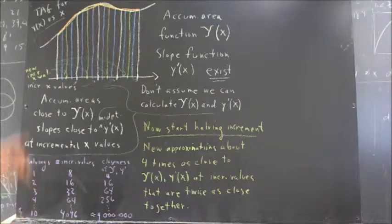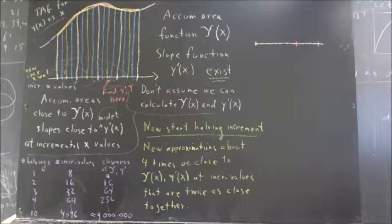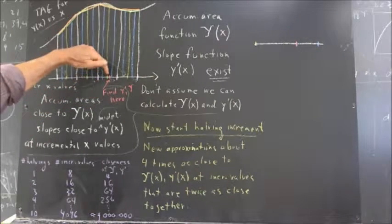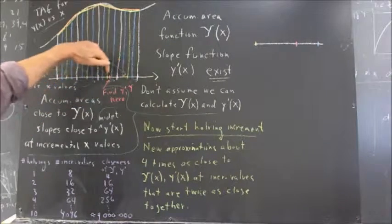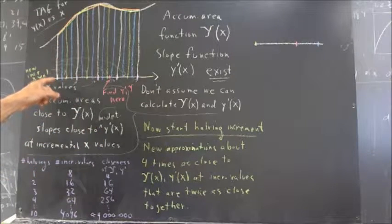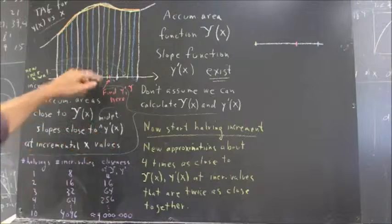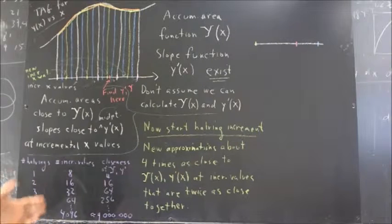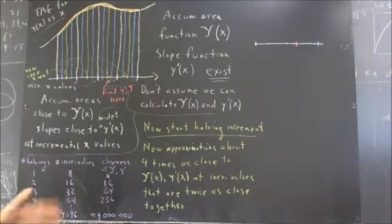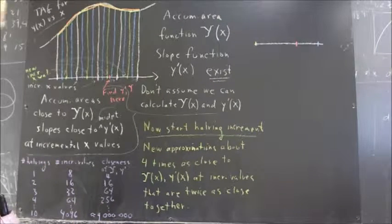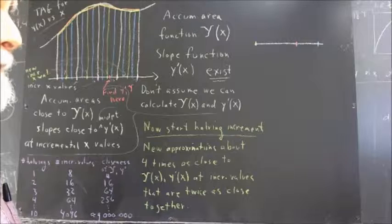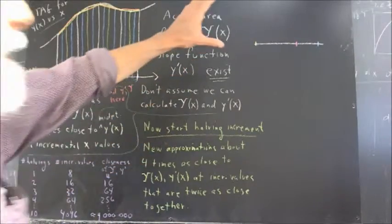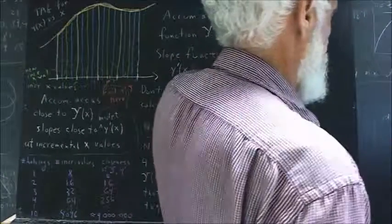Now what are the implications of this whole thing? Let's say we want to know what the values of y prime and big fancy Y are at a particular point — our slope function and our accumulated area function. So that basically means we want to find the accumulated area from here to here and the slope at this point with a great deal of precision. When you prove this in calculus, you'll use slightly different notation, but what you're doing is essentially equivalent to what I'm doing here.